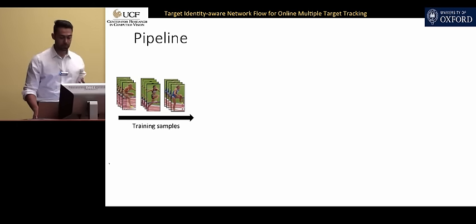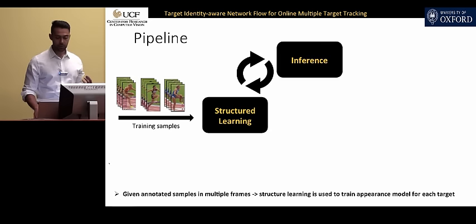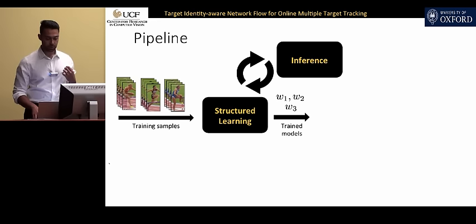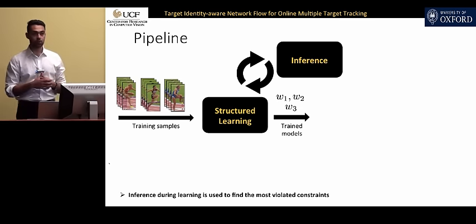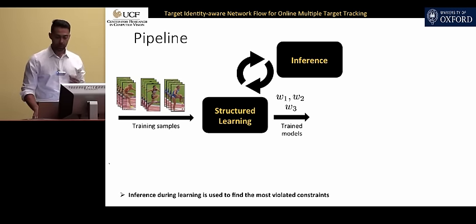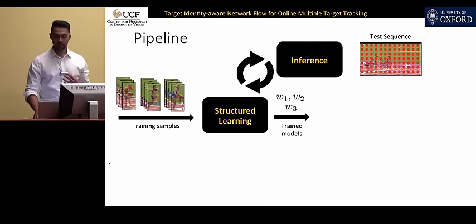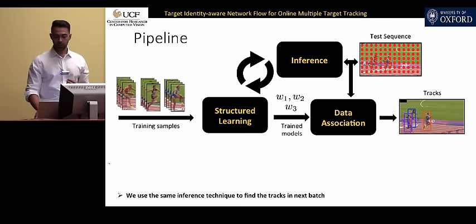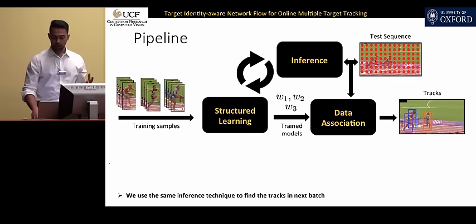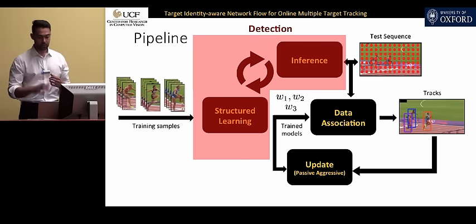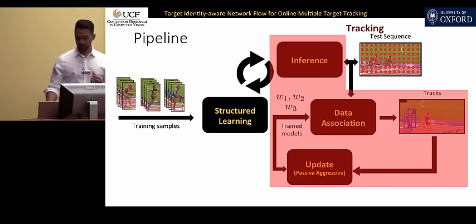Here is the pipeline. Given positive samples for every target in a few frames — for example, three targets each with four positive samples — we use structural learning to train a model for each target and get model parameters W1, W2, and W3. The inference finds the most violated constraint used during structural learning, for which we propose a new network flow graph. Once parameters are learned, given a test sequence with dense overlapping candidate windows, we use the same inference function and model parameters to do data association and get the tracks. We then use a passive-aggressive algorithm to update the model if necessary.